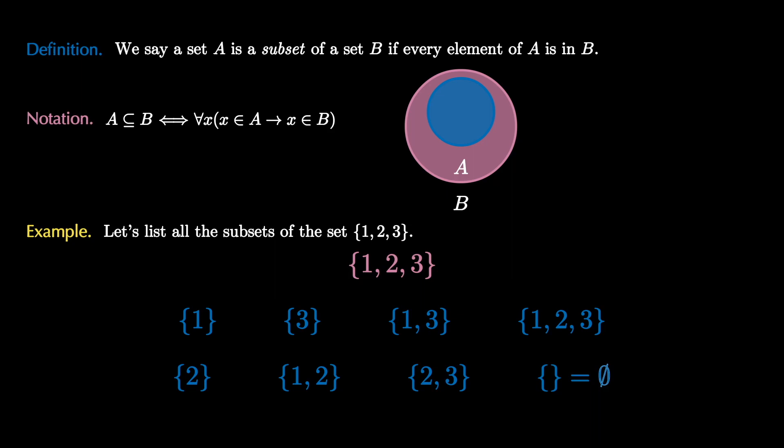So there are 8 subsets of the set 1, 2, 3. We can use the subset relation to define set equality. We say A equals B if and only if A is a subset of B and B is a subset of A. So the equality relation between sets is actually a direct translation of the biconditional connective.